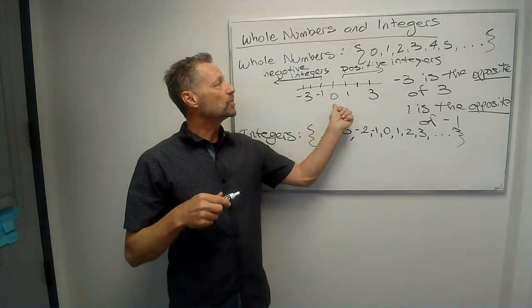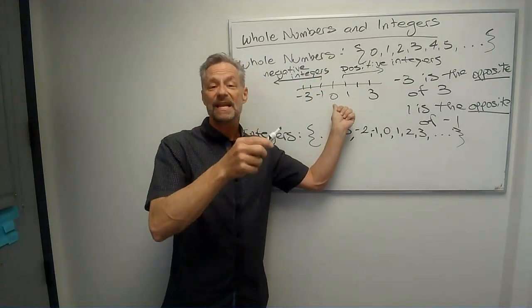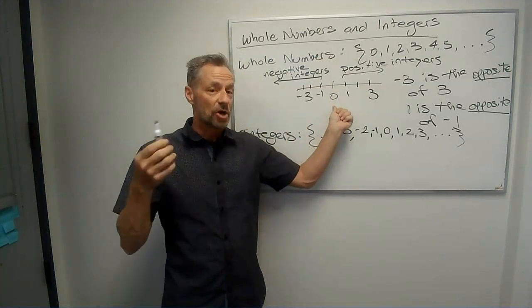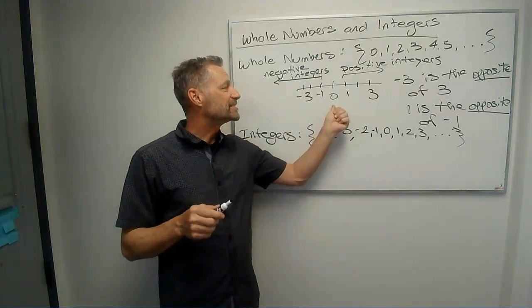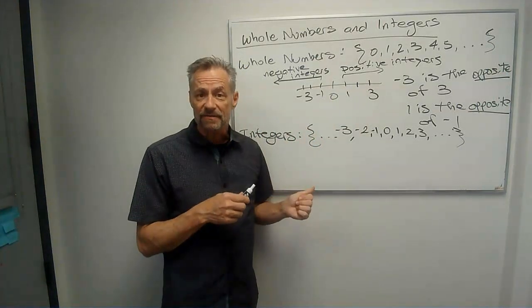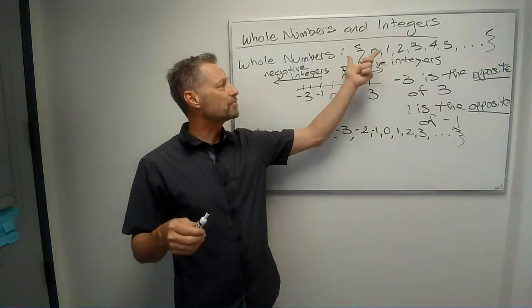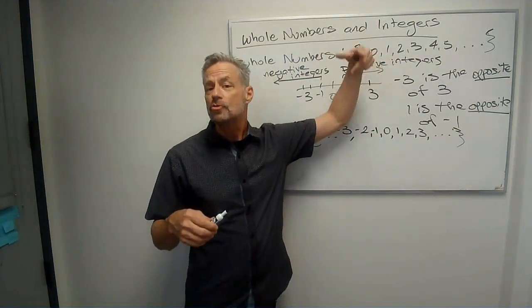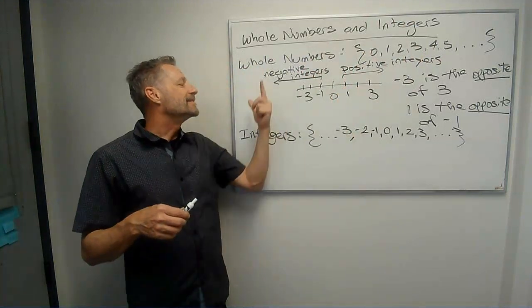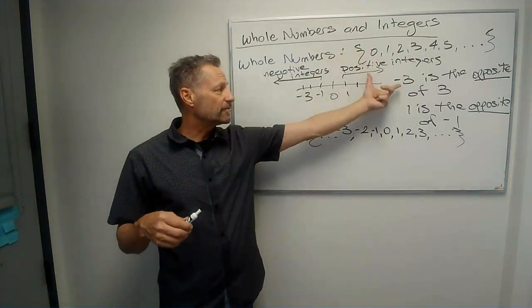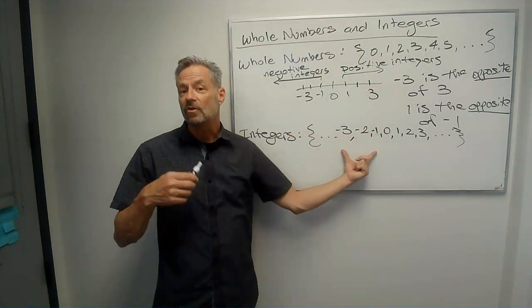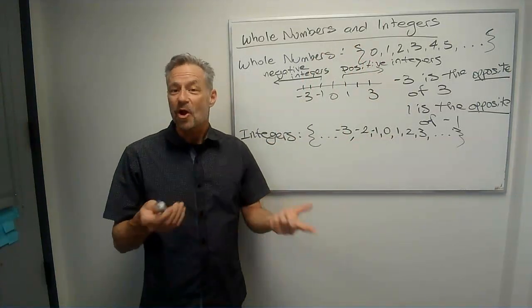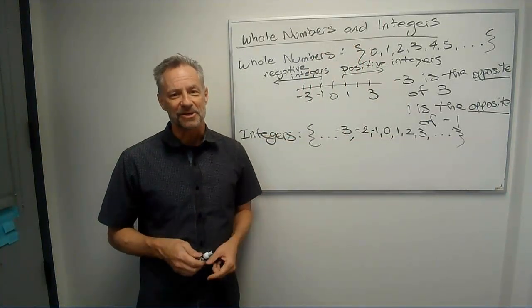0 is the only integer that doesn't have a unique opposite. 0 is its own opposite. And 0 is neither positive nor negative. But that's the idea. So the whole numbers start at 0, 1, 2, 3, et cetera. The integers are all of the whole numbers, with the addition of all of their opposites. Okay, so that's the idea of whole numbers and integers.